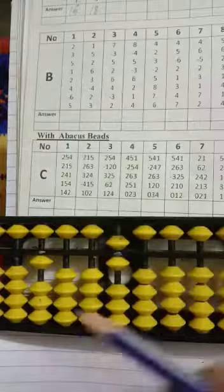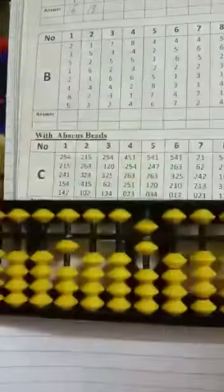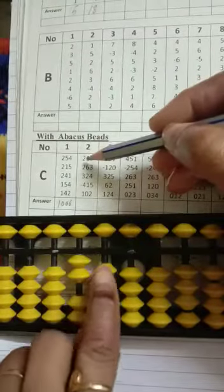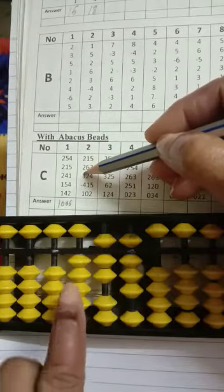Your answer will be 1006. 1-0-0-6. Now second one is 215, then 263, then 3.